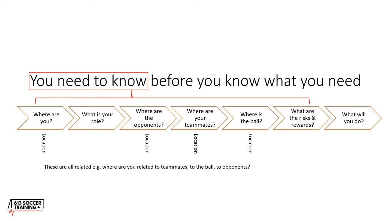As a final summary: you need to know these first six items before you know what you need. Where are you, what is your role, where are the opponents, where are your teammates, where's the ball, and what are the risks and rewards in that particular part of the field. You could lay it out throughout your season plan — the risks and rewards for being in possession, out of possession, positive or negative transition in the various parts of the pitch.